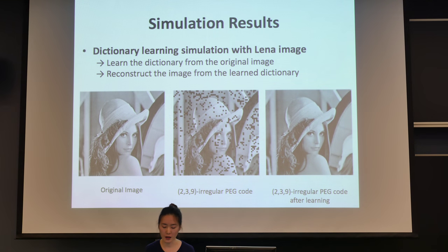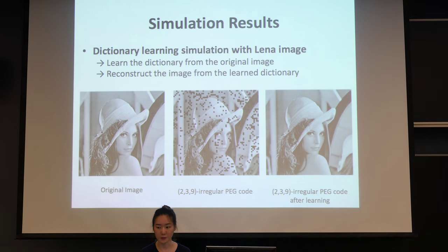We simulated with the famous Lena image. The simulation we ran is first learning the dictionary from the original image, and then reconstructing the image from the learned dictionary. The first image is the original image, and the second image is using the dictionary, which is just a plain LDPC code without any kind of learning. You can see that the reconstructed image is kind of not good, like corrupted by these black dots.